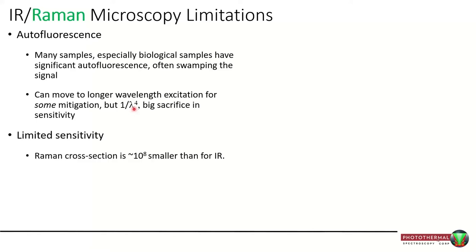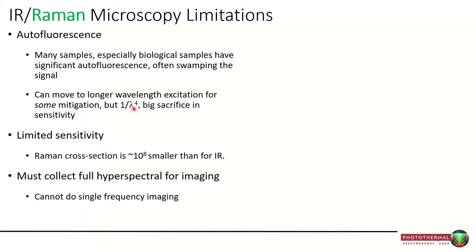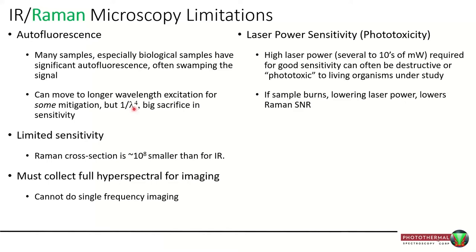Raman also has a fundamentally low Raman cross section — it's a limited sensitivity technique relative to infrared. You must collect in full hyperspectral mode if you want to do imaging; you can't do single-frequency imaging. For live biological work, phototoxicity can be a major issue: the more laser power you put in, the better the sensitivity, but at 10 milliwatts or more, live organisms aren't happy. So you have to operate at much lower power, which drops sensitivity and extends measurement time.